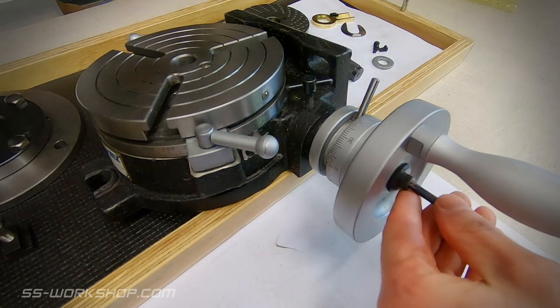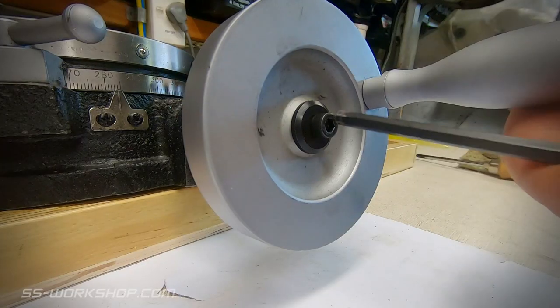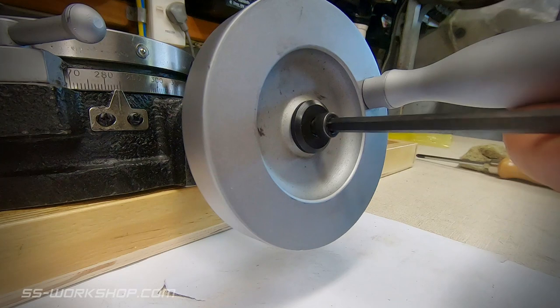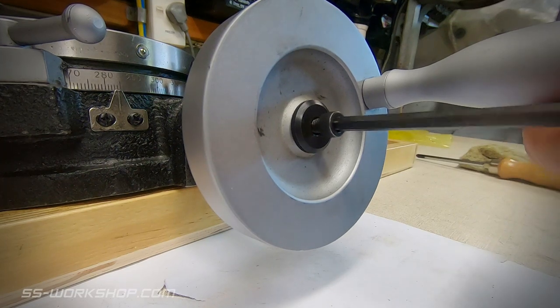The first step is to remove the allen key bolt in the handle. This will then allow us to pull the handle off which might be a bit snug if it hasn't been off before.